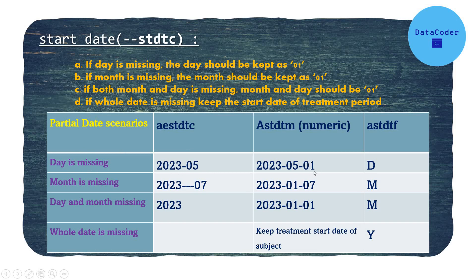For the start date examples: in the first scenario, the day is missing — it's May 2023 — so it's imputed as the first day of the month: 01-05-2023, and ASTDTF is set to 'D'. In the second scenario, the month is missing — it's the 7th, 2023 — so January is imputed, giving month 01, and ASTDTF is 'M'. When both day and month are missing and only the year is present, 01-01 is provided and ASTDTF is 'M'. When the whole year is missing, you can use treatment start date per your SAP, and the flag should be 'Y'. The SAS coding is straightforward — you concatenate '01' or 'January' as required to make it a complete date.